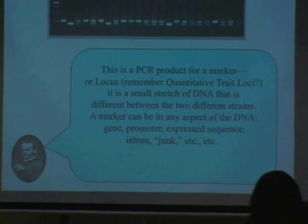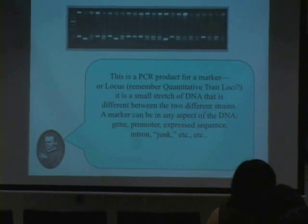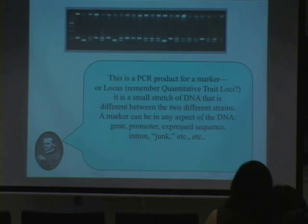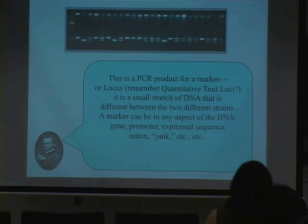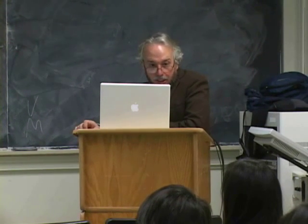Along those genes, what we have are markers, or as they are also called, loci. Each of these loci are markers, and there are a whole lot of them across each chromosome. At each of these loci, they have already identified if that locus — at a given locus — does that recombinant inbred strain have the B form of the DNA or the D form of the DNA.